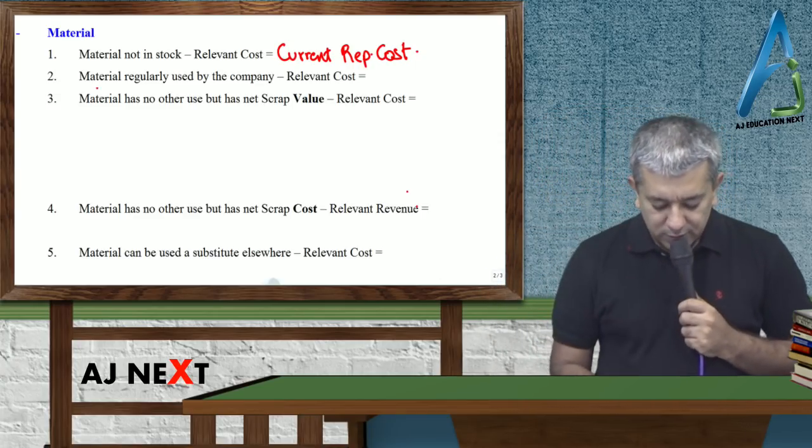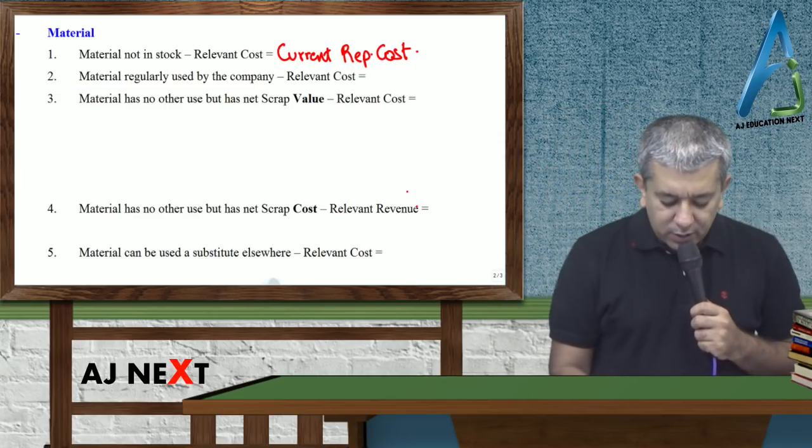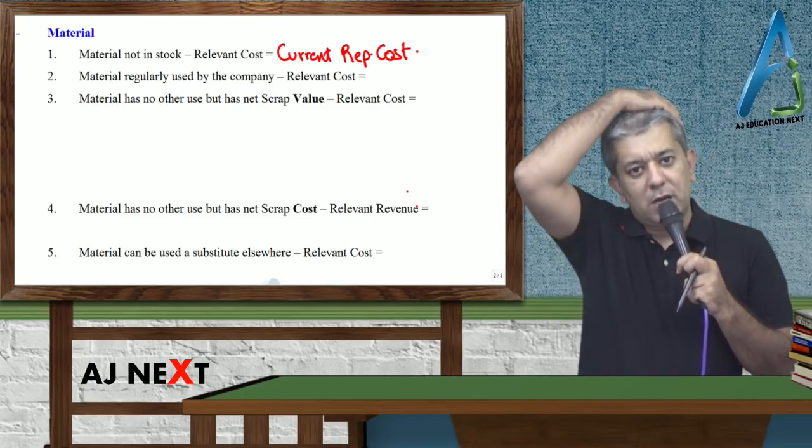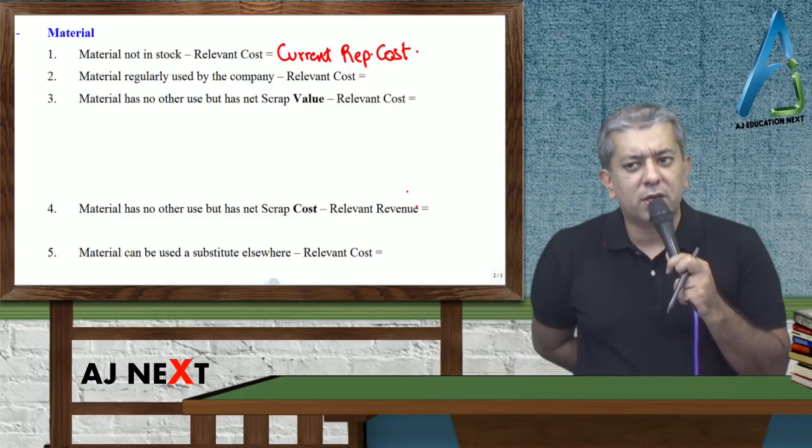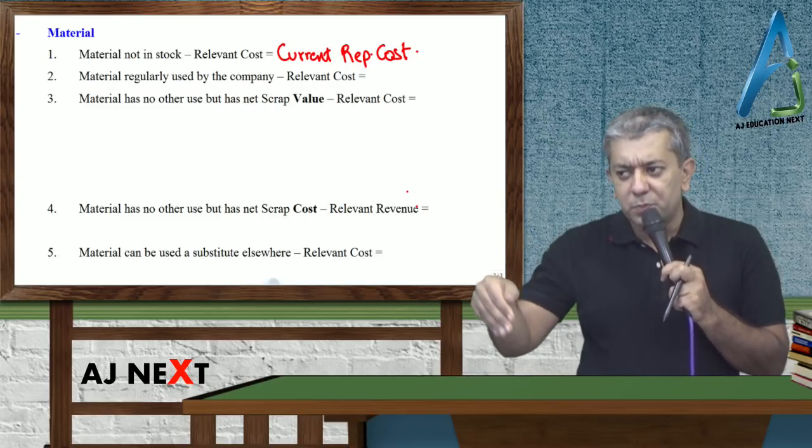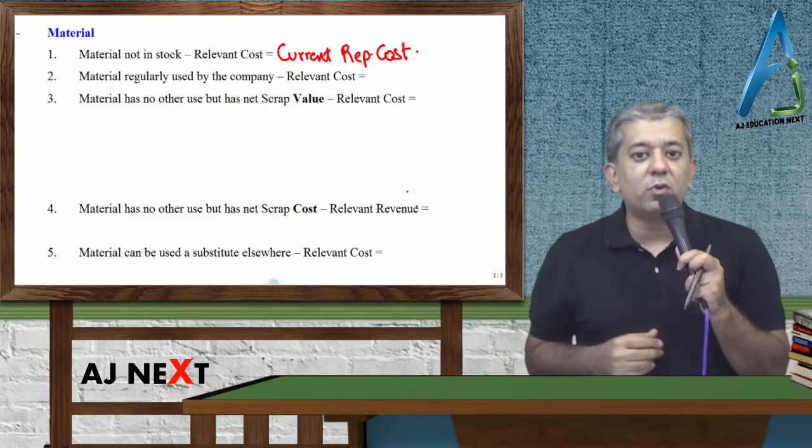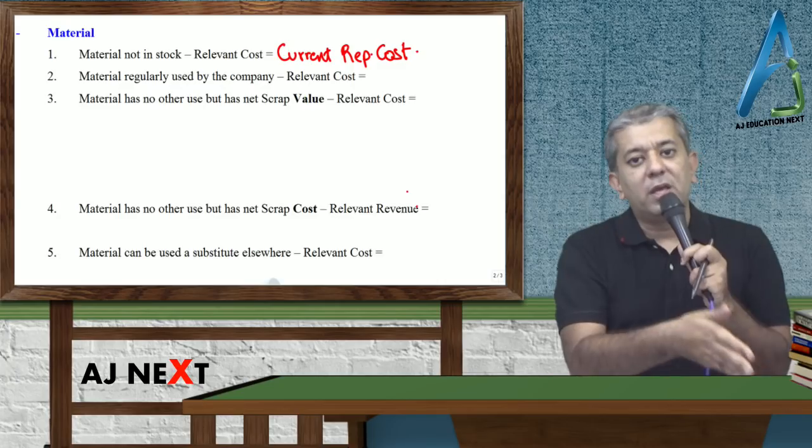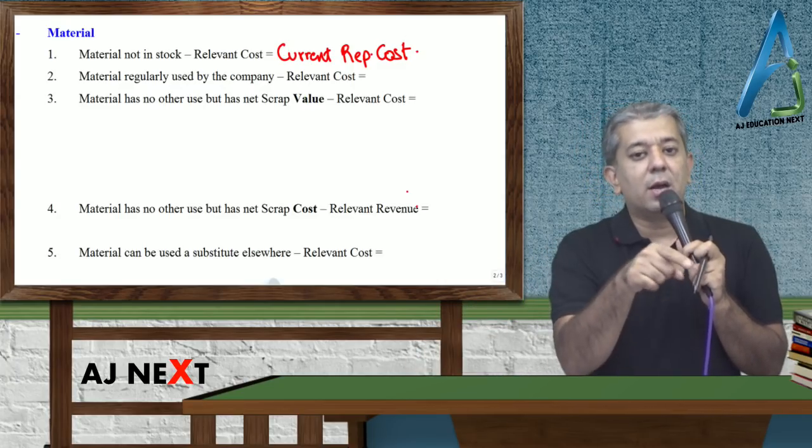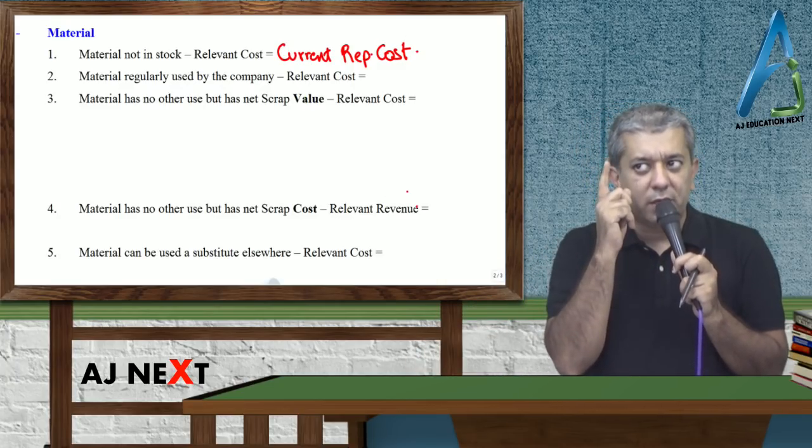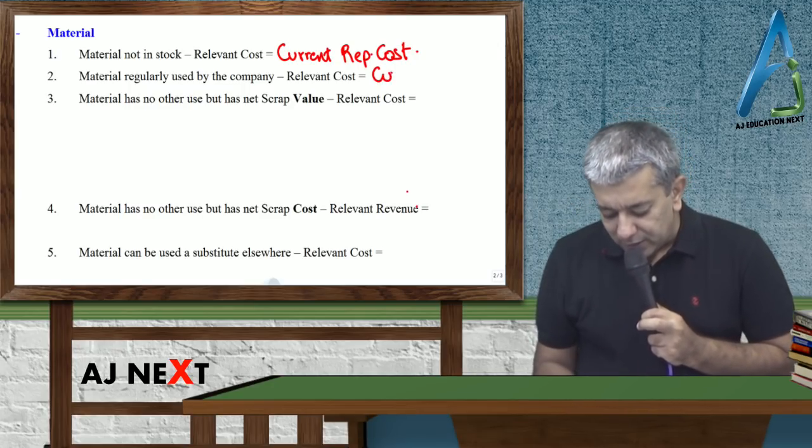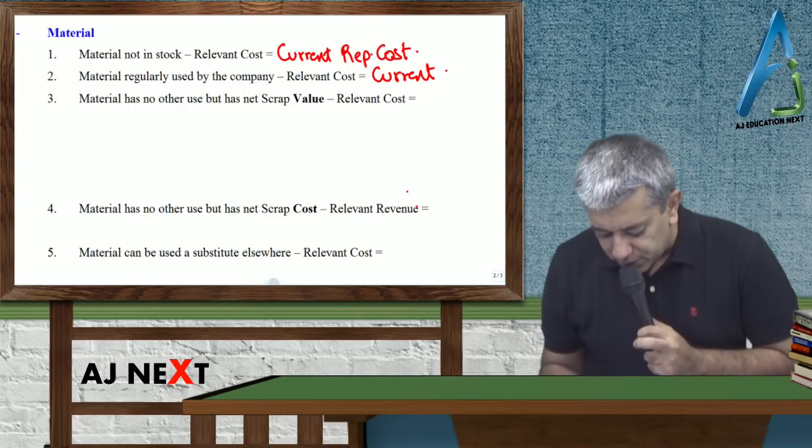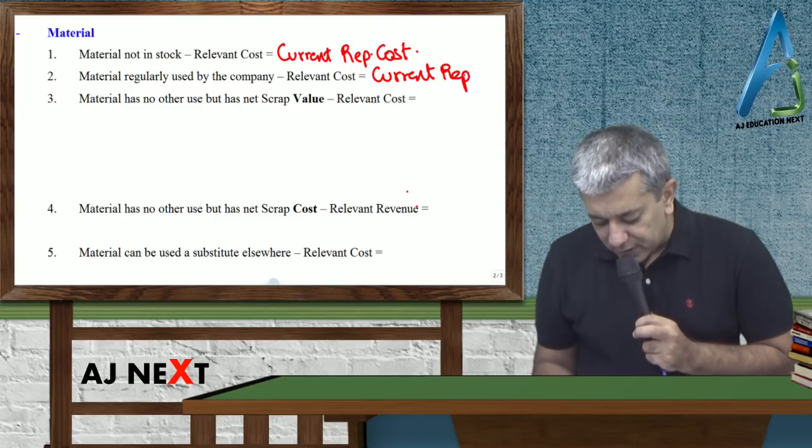Second, material is regularly used by the company. Think about it - you have some material that is regularly used for business. One day a proposal comes and you need that material for this proposal too. You can use this material, but then there will be a shortage. To meet the shortage you have to buy from the market. So ultimately your relevant cost in this particular case will be nothing but current replacement cost.